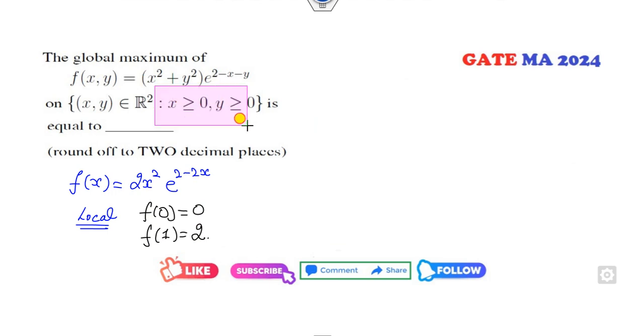Now look at the boundary points. The boundary points are also given to you, that means x equals zero, y equals zero. So I can take first x equals zero. What will be my function? f(0,y) will be y² e^(2-y).